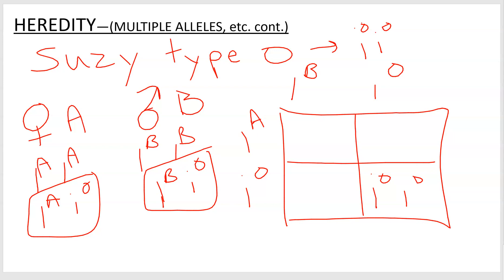Funny story: I taught in the army and was giving this genetics lecture. A guy in the back said, 'I'm type B, my mom is type O, and my dad is type A.' I said, 'No he isn't.' He goes, 'Yeah he is.' I said, 'Well if that guy's type B, that's not your dad.' The guy turned white as a sheet. He came back next class and said he called home — turns out he was wrong, his dad was type A, so everything was fine.